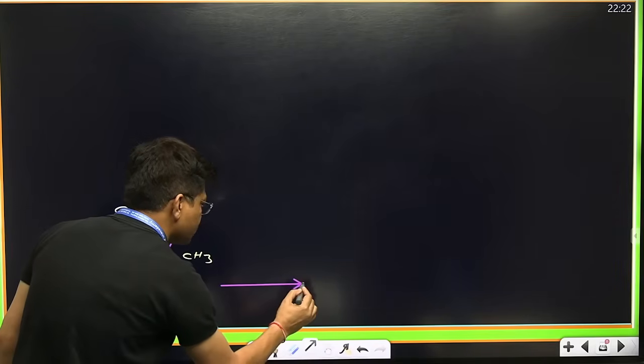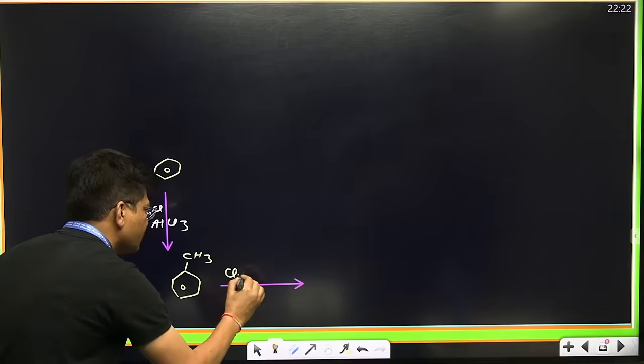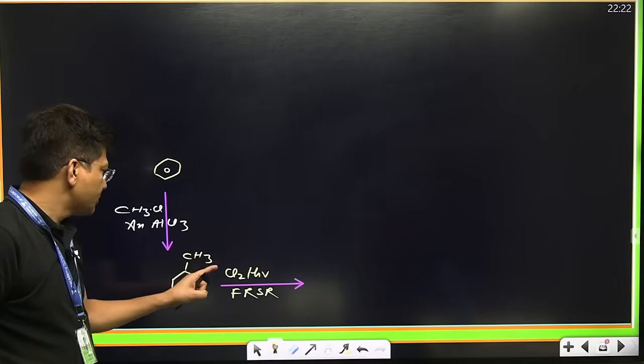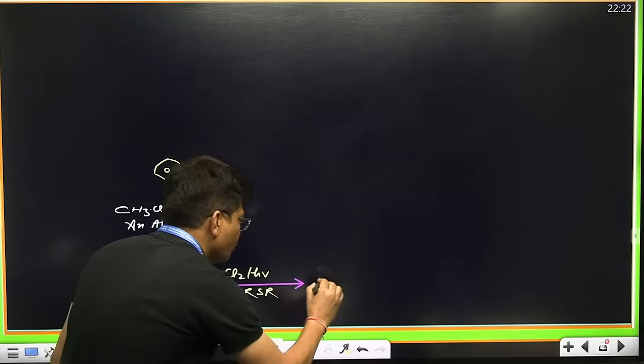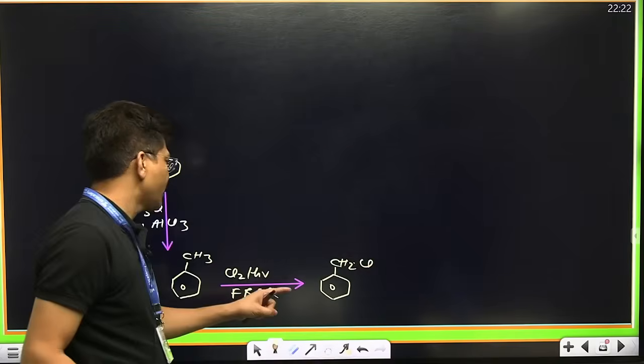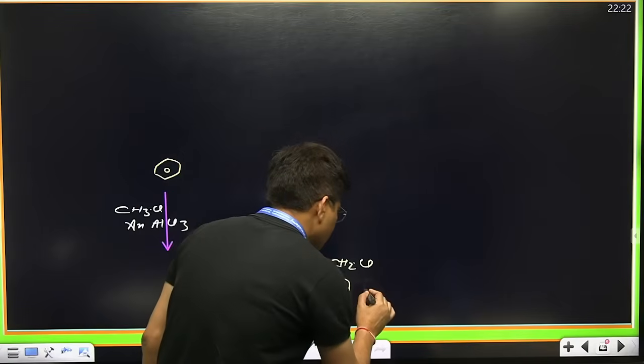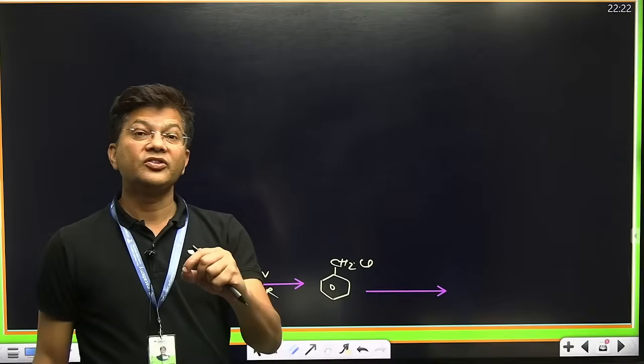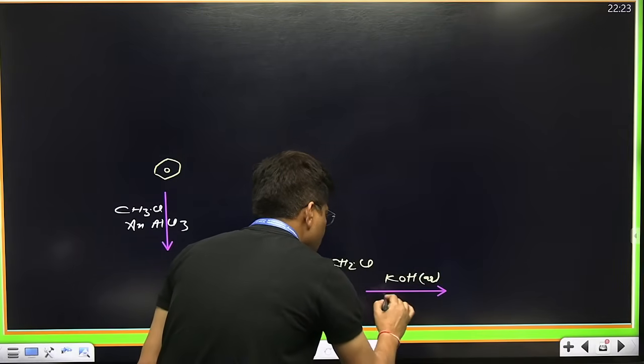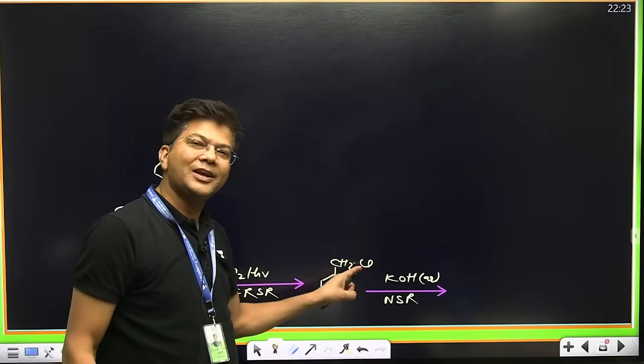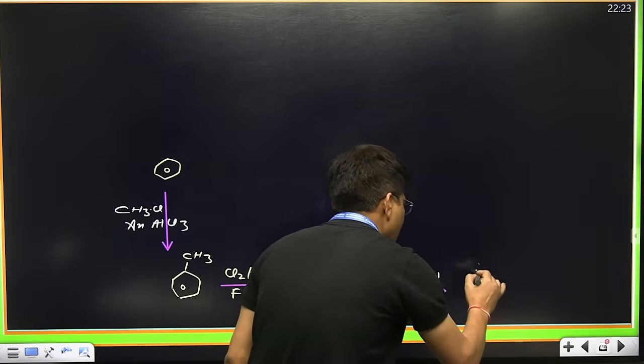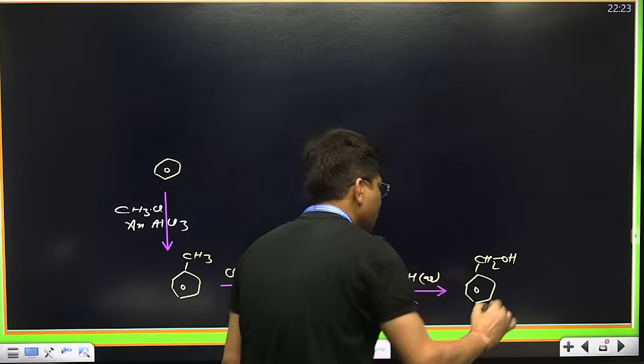This toluene on reaction with Cl2 and light undergoes free radical substitution reaction. One hydrogen with one chlorine will get displaced and you will get benzyl chloride. This benzyl chloride on reaction with KOH aqueous undergoes nucleophilic substitution reaction, producing benzyl alcohol, a one degree alcohol.